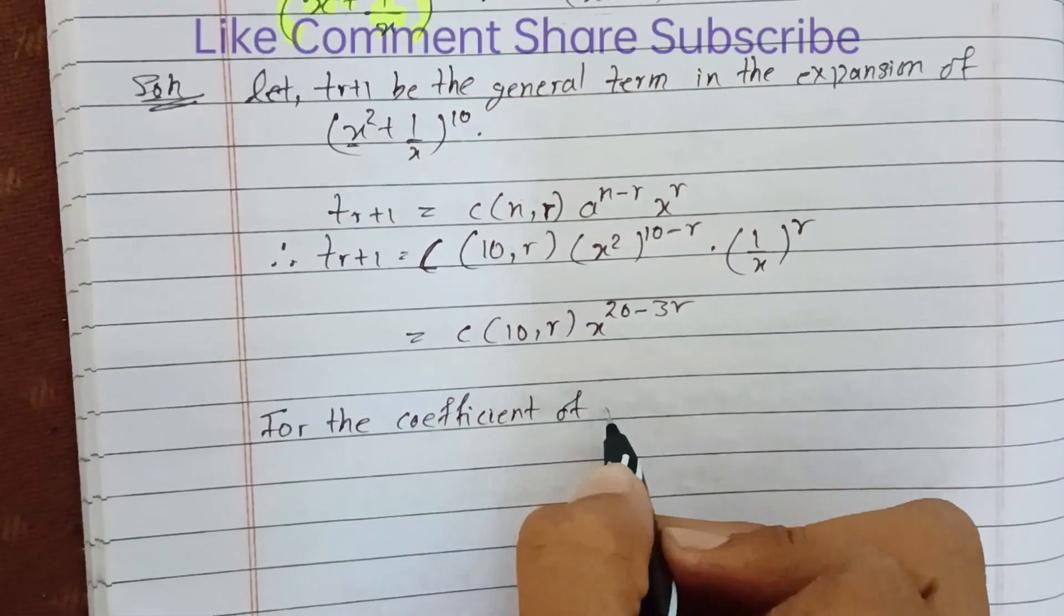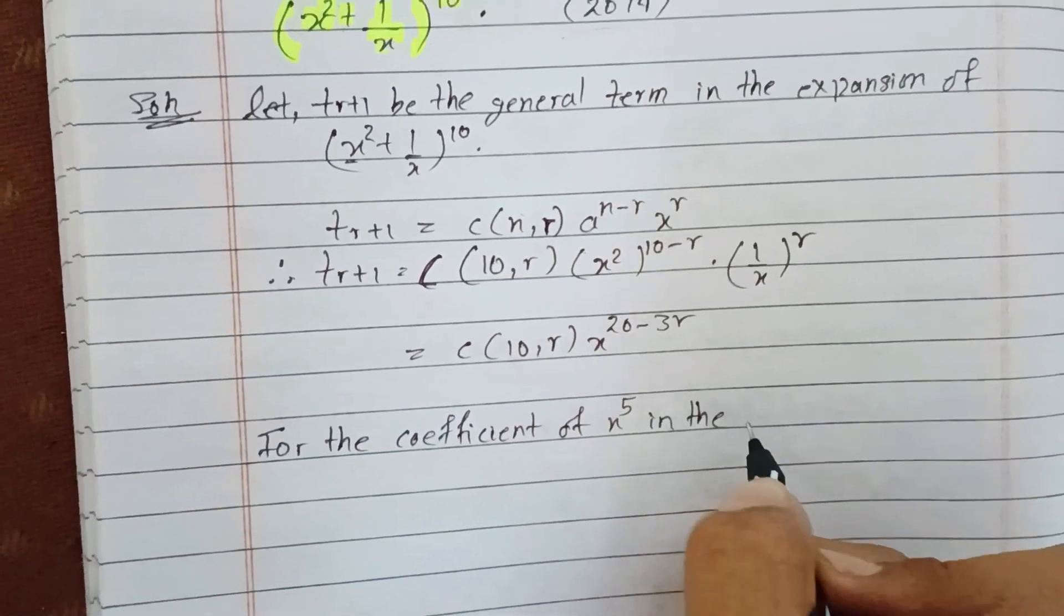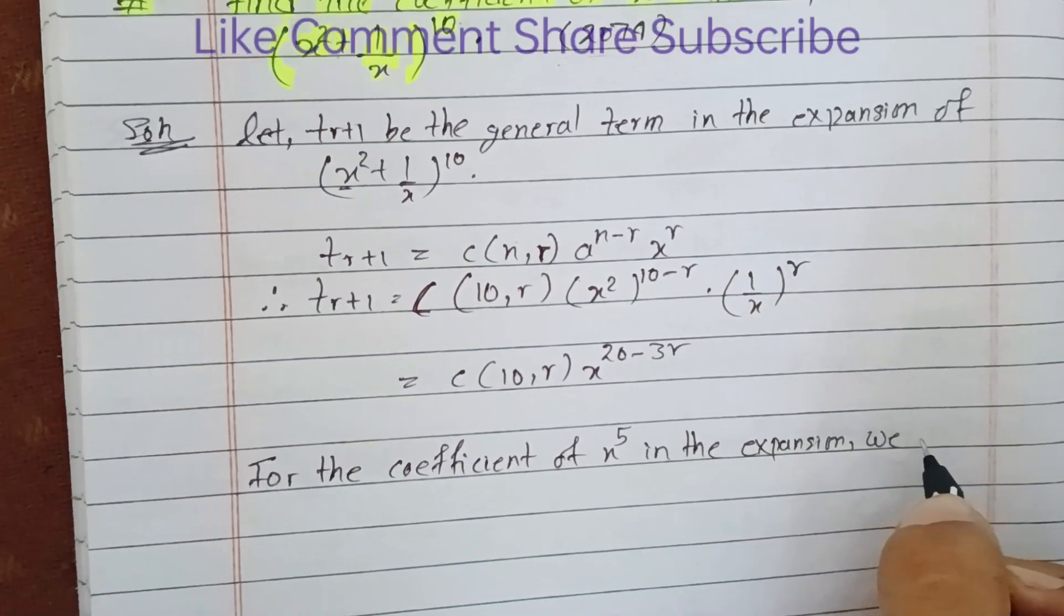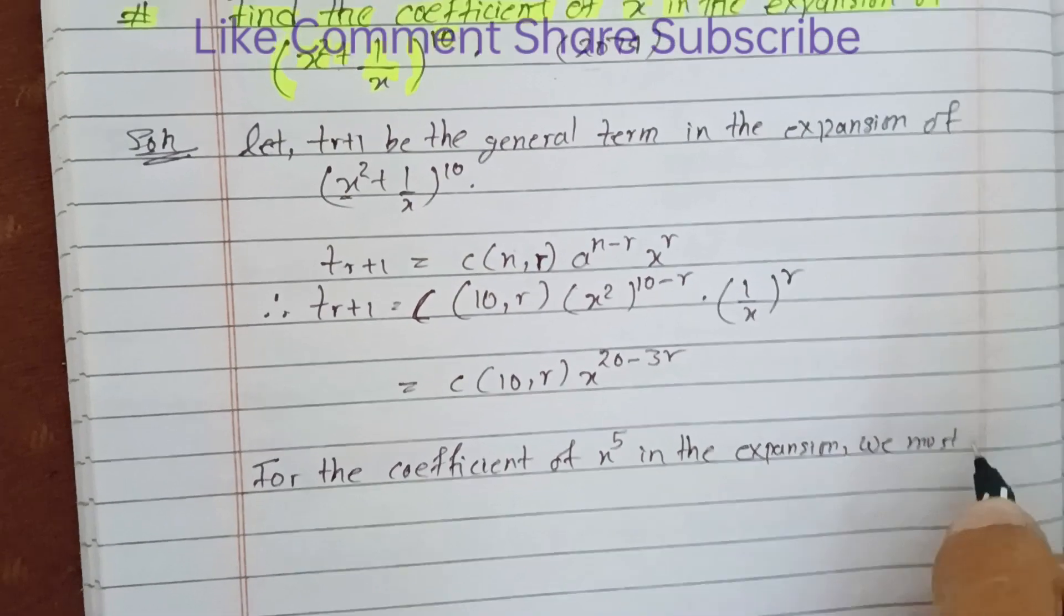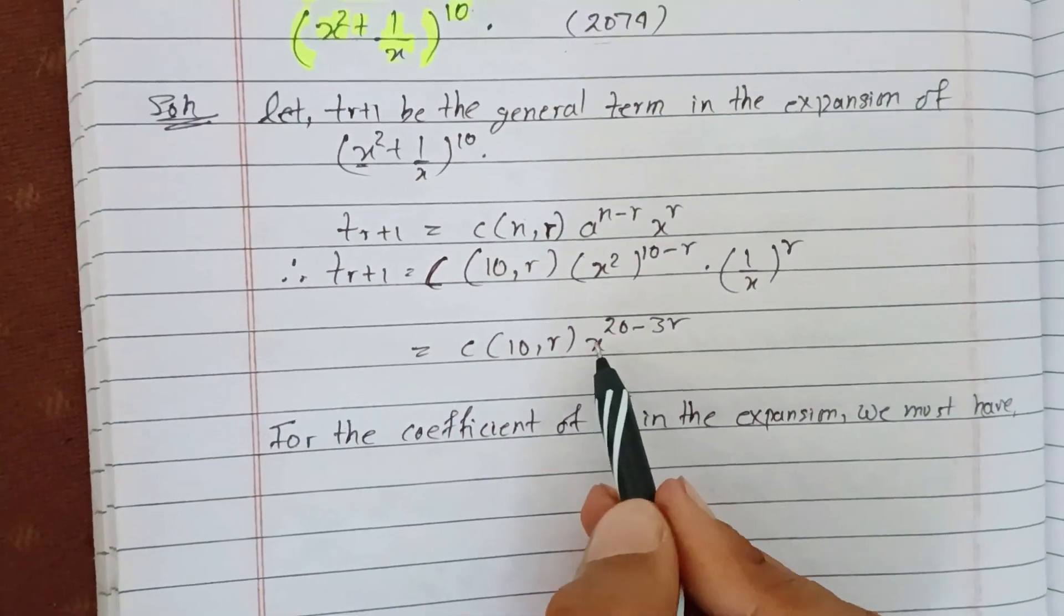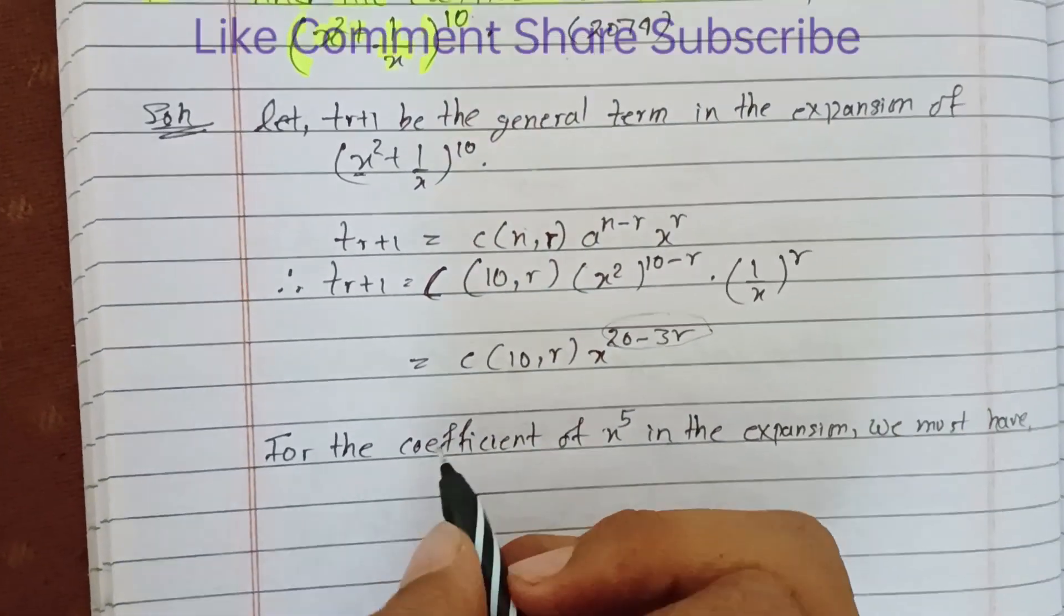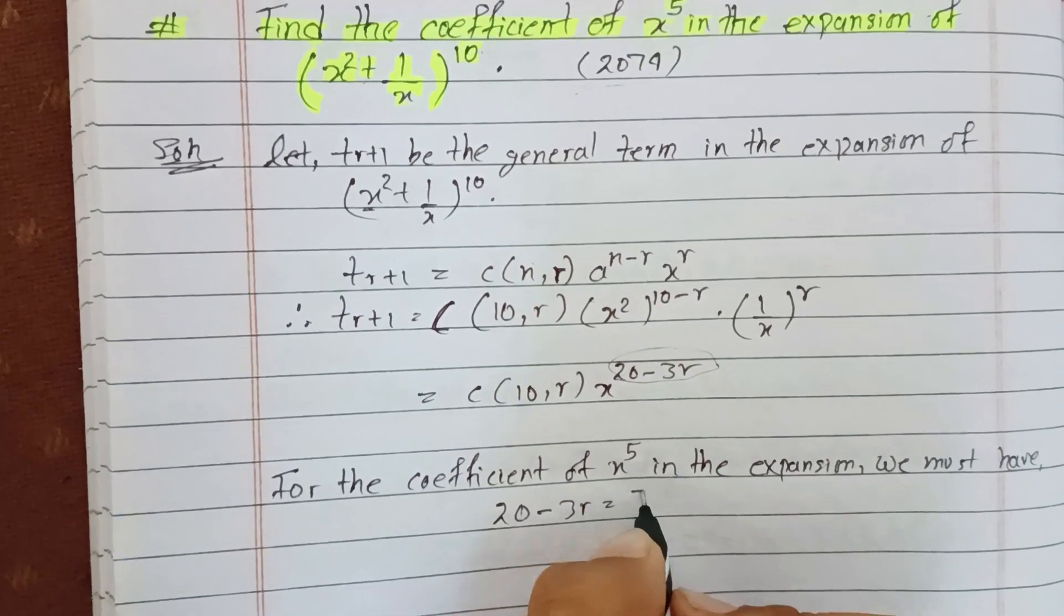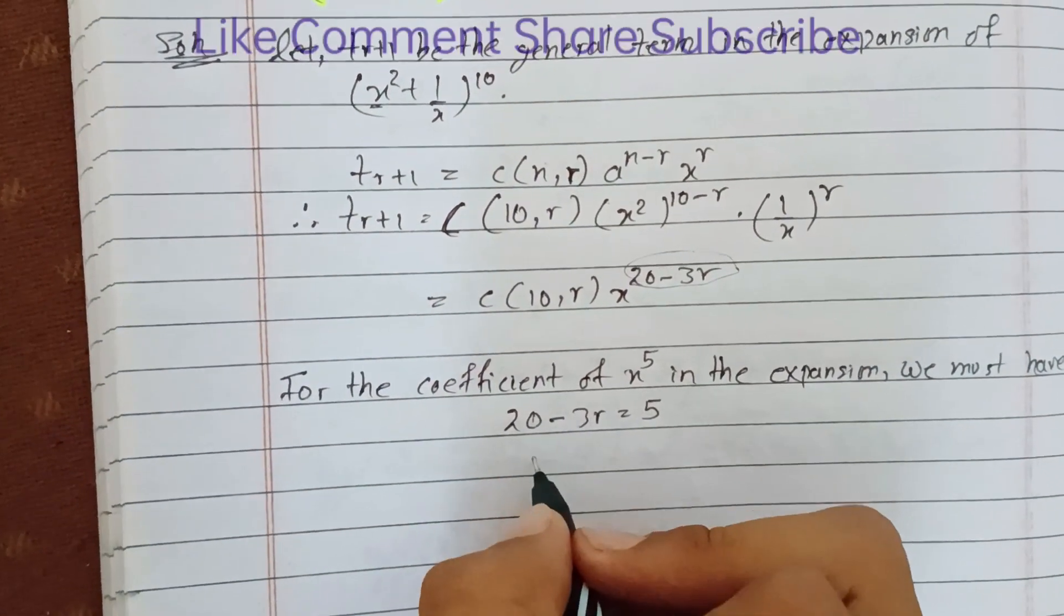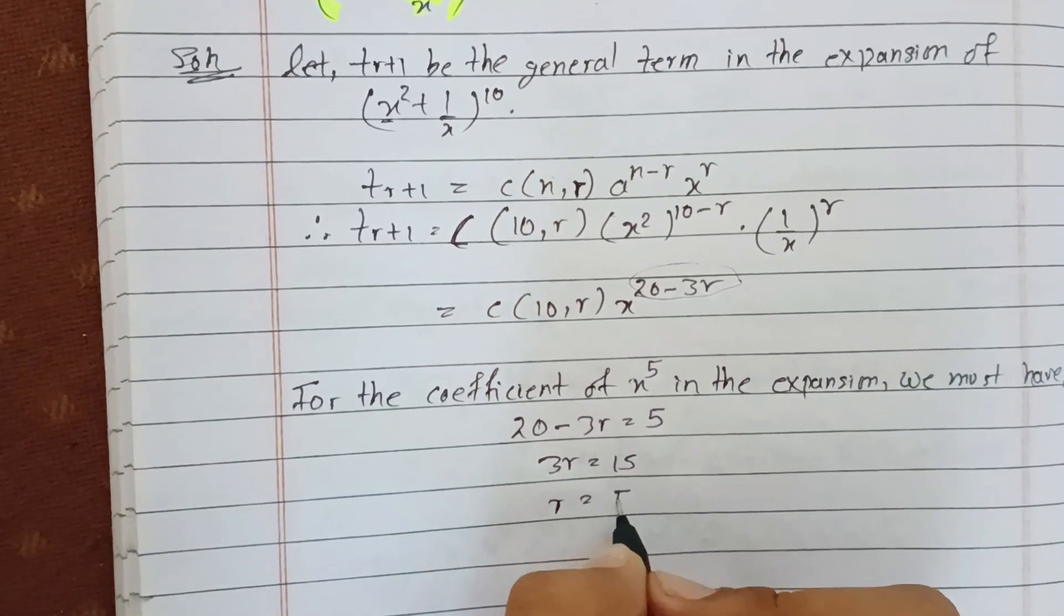For the coefficient of x^5 in the expansion, we must have 20 - 3r = 5. Solving this gives 3r = 15, so r = 5.